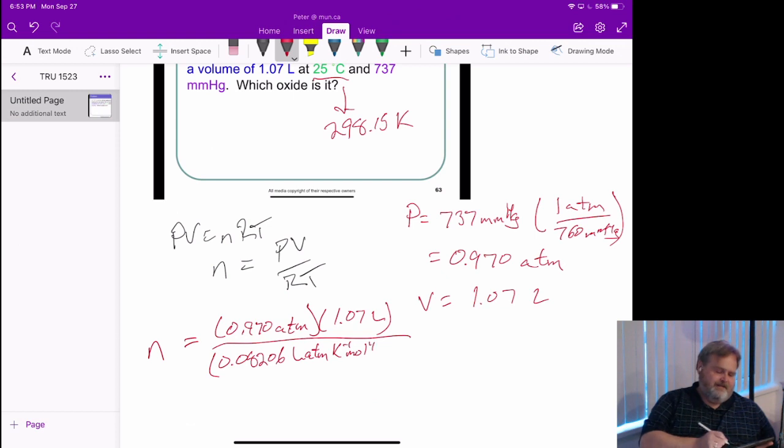In this case, we're going to use 0.08206 liter atmosphere per Kelvin per mole. And that's just one that I've got on the top of my head. Choose a value of R and units that work for you in terms of what you can find.